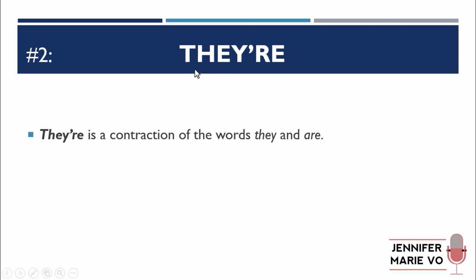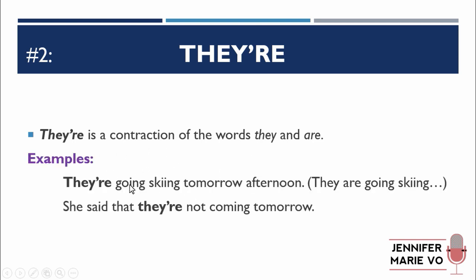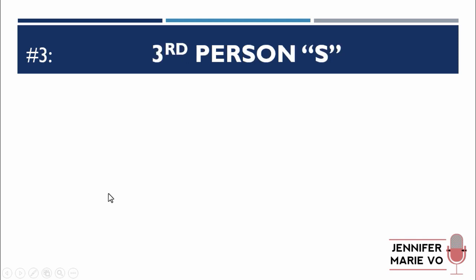The next one is "they're" — this is the easiest because "they're" is a contraction of "they" and "are," so they're means they are. "They're going skiing tomorrow afternoon." "She said that they're not coming tomorrow." If you can replace "they're" with "they are" and it makes sense, that's a good hint that you should use the apostrophe and spell it T-H-E-Y-apostrophe-R-E.